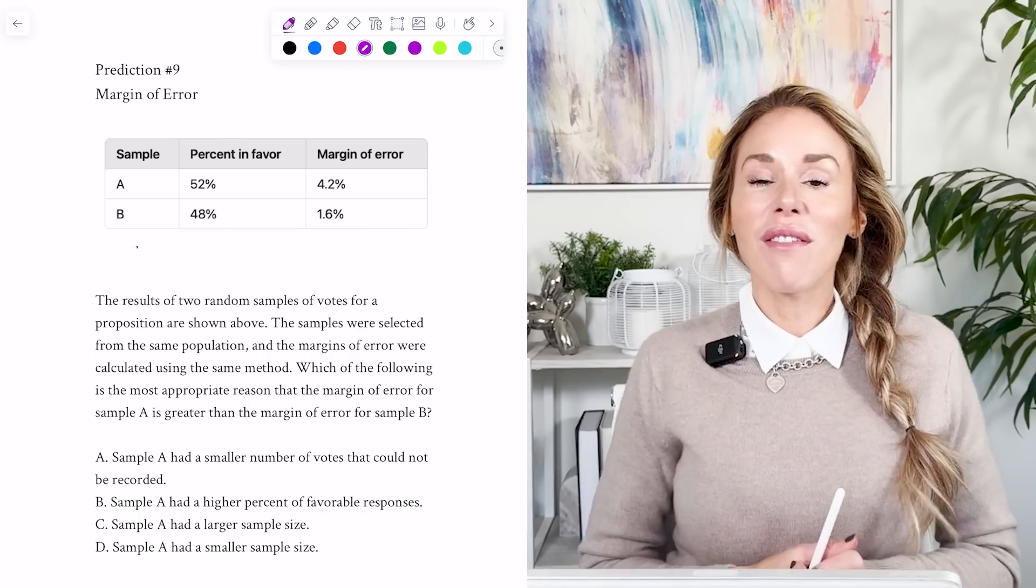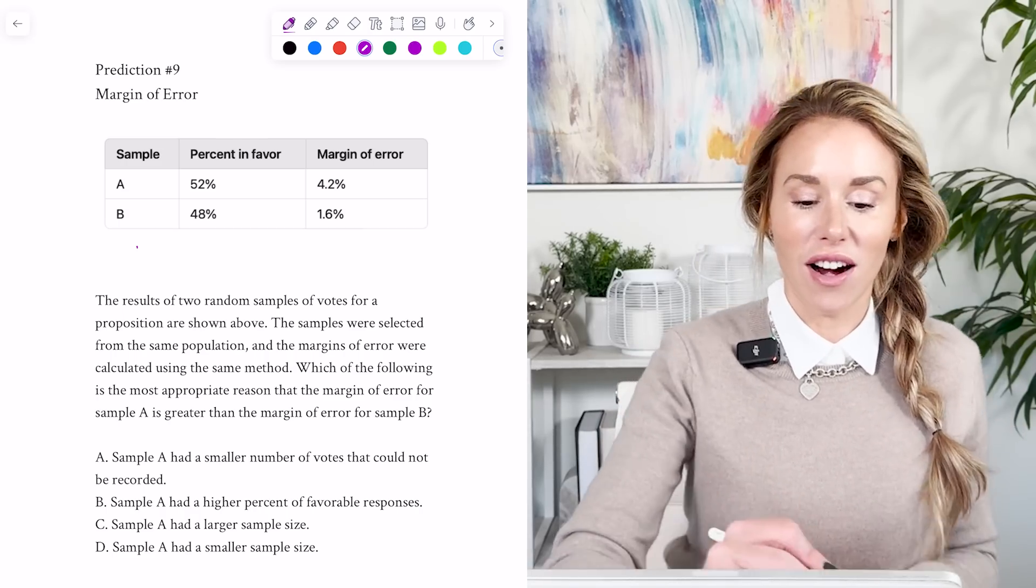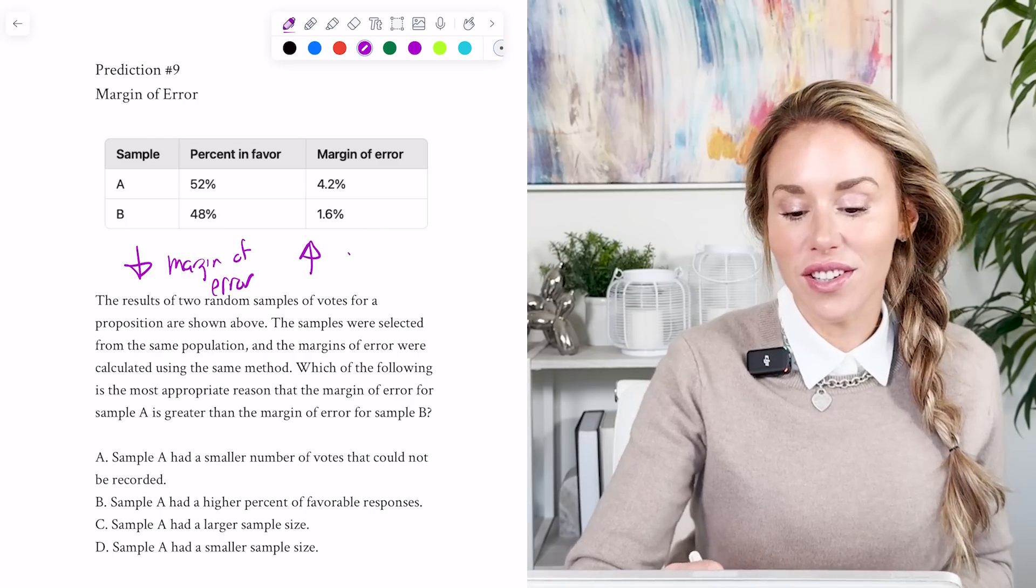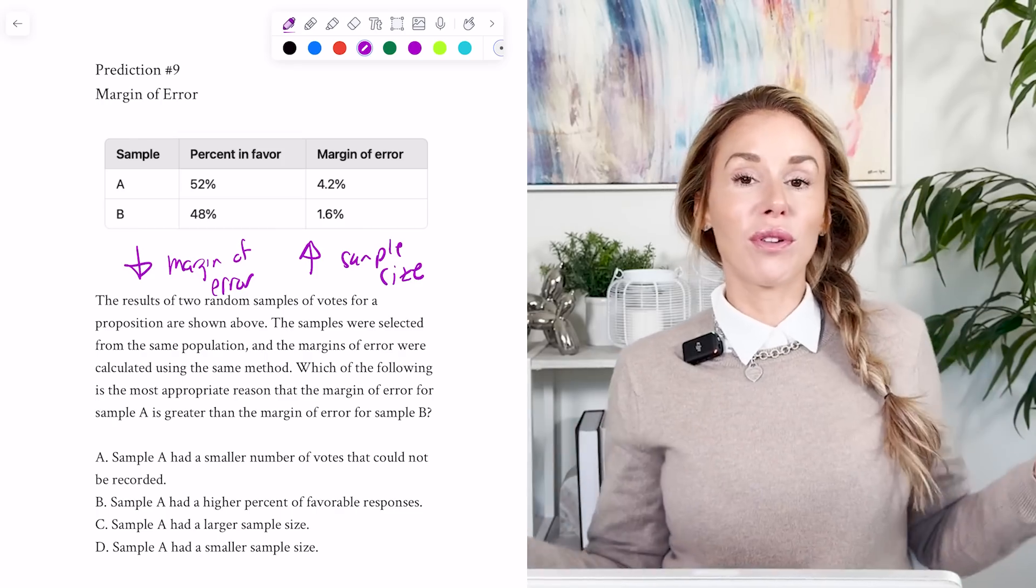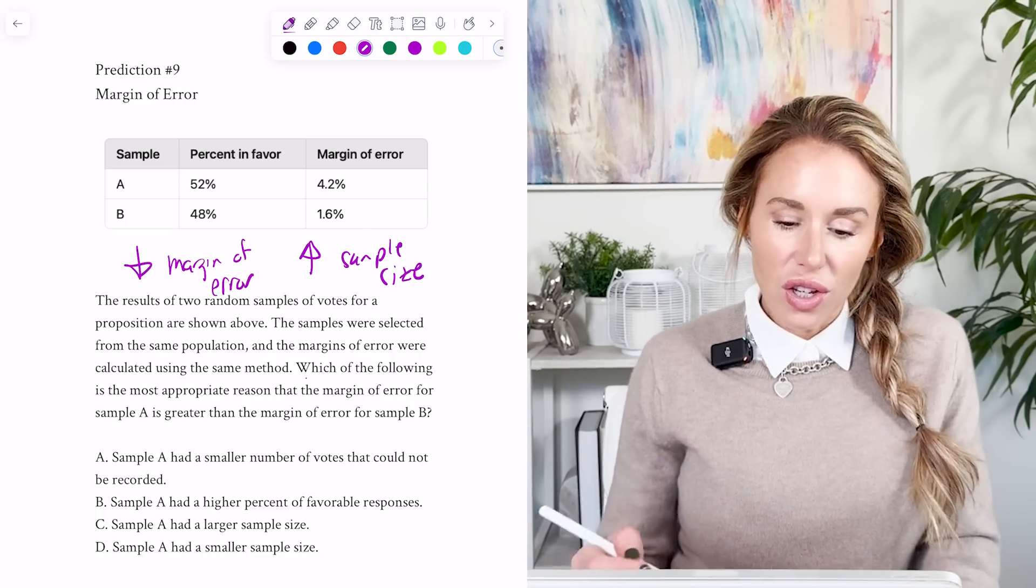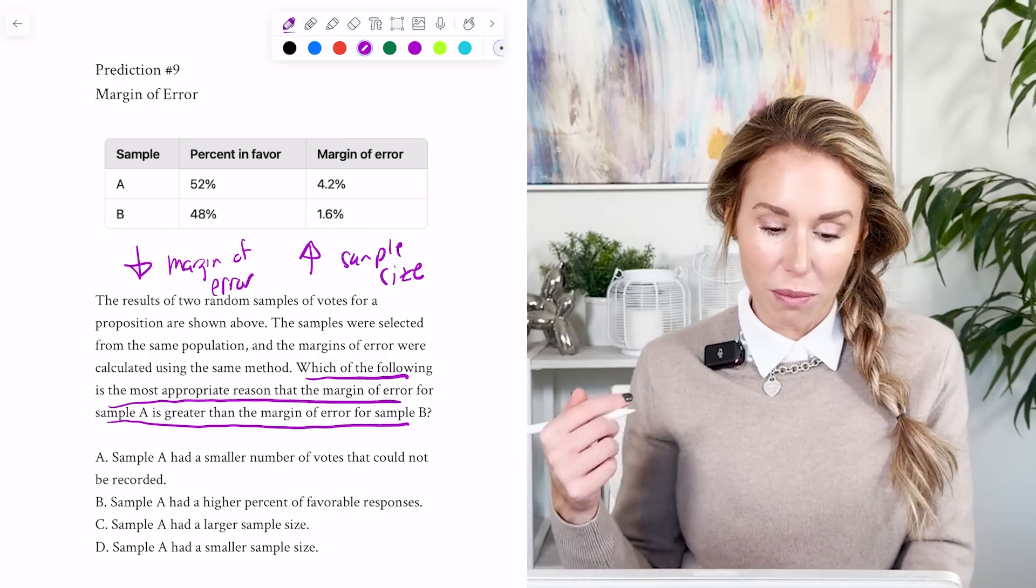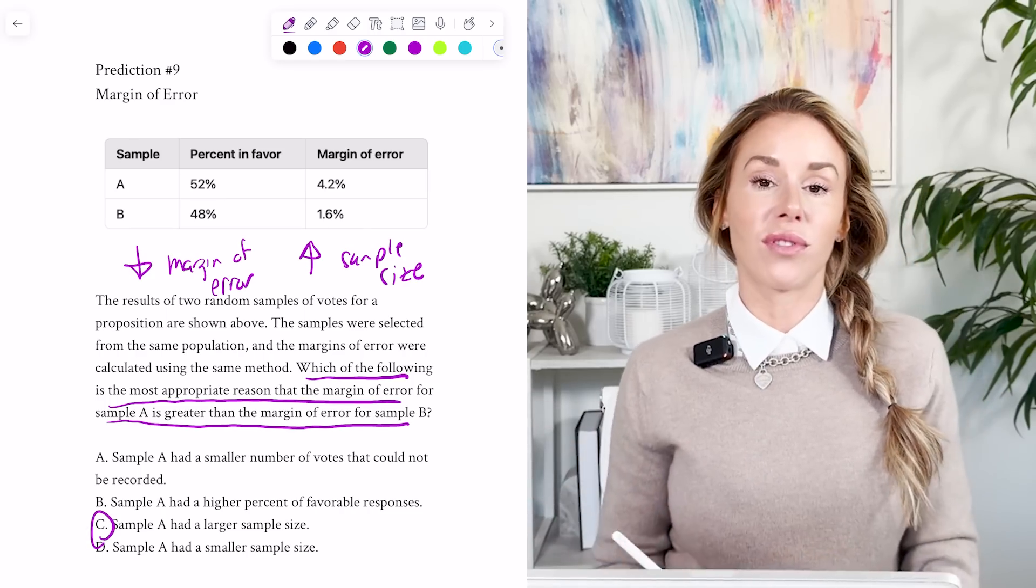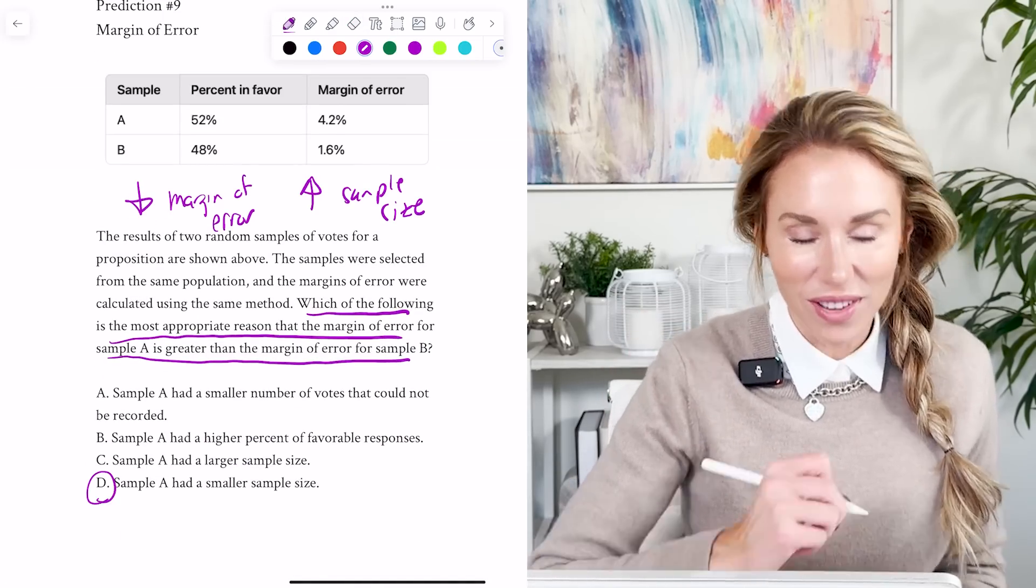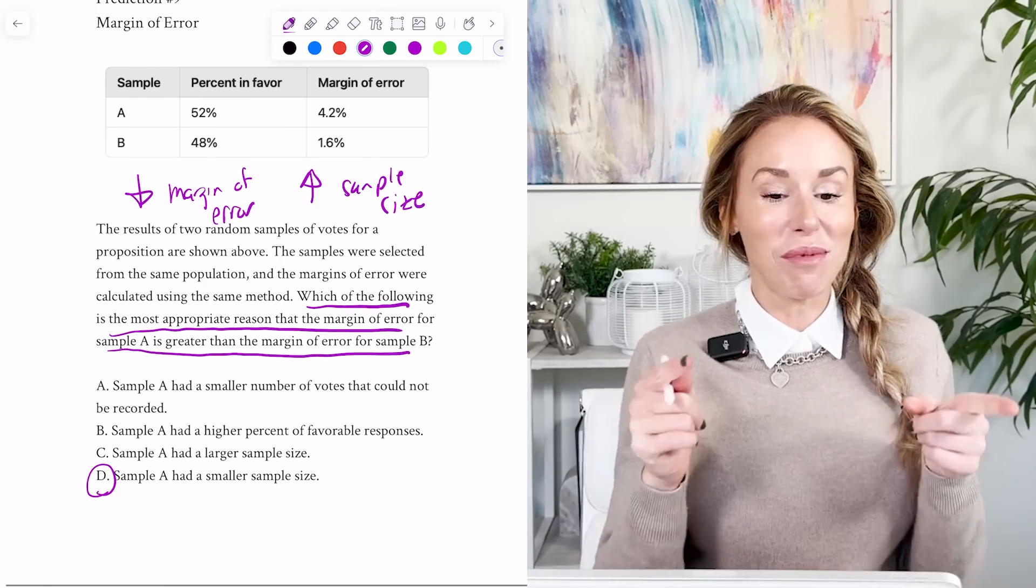All right, my ninth prediction is that they will have a question on margin of error. So the big thing to know with margin of error is if you want to decrease the margin of error, you need to increase the sample size. It's not improving the tool or any of the other trap answers they might give you. It's all about the sample size. So when they say which of the following is the most appropriate reason that the margin of error for sample A is greater than the margin of error of sample B, well, sample A had a larger sample size. Oh, wait, no, they almost tricked me. If it's a margin of error is greater, it has a smaller sample size. So be careful, take an extra five or 10 seconds to process it, because I almost got got on that problem.